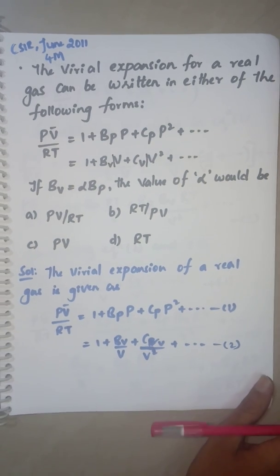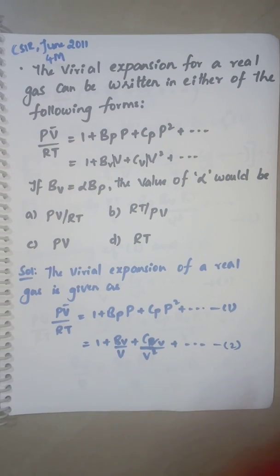The Virial expansion for a real gas can be written in either of the following forms: PV/RT = 1 + BP·P + CP·P² + ... or the pressure can be replaced by 1/V.